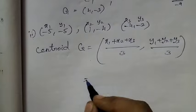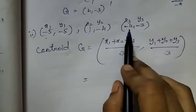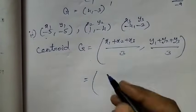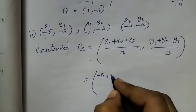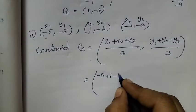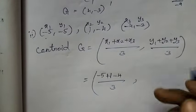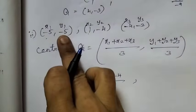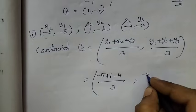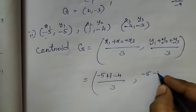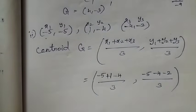Now, adding all of this: first, minus 5, plus 1, minus 4 — watch the signs — by 3. Then for the y-values: minus 5, minus 4, minus 2, by 3.